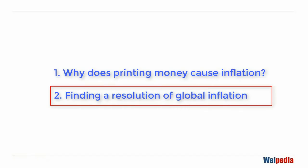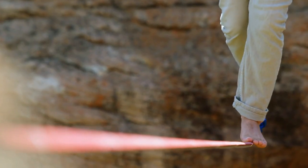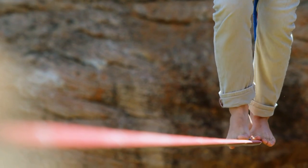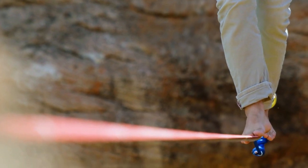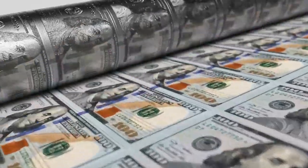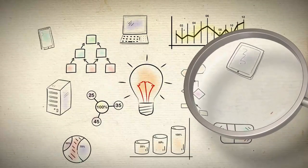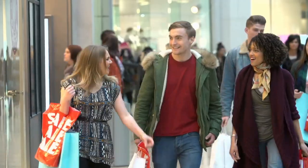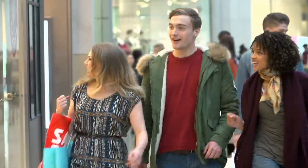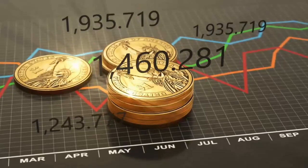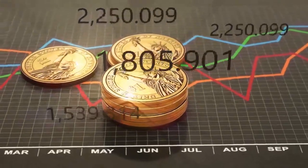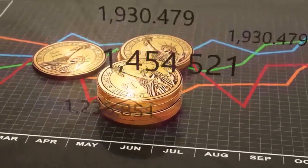Is there a solution to the global inflation problems we are all facing today? The amount of money printed must at least match the production of goods and services rendered, and not involve excessive printing. With this responsible approach, we should be able to control inflation. For the time being, I still favor gold and silver.